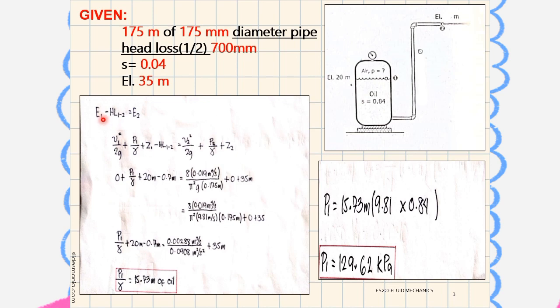Here is the formula. E1 minus HL1-2 equals E2. So, V1 squared over 2g plus P1 over gamma plus Z1 minus HL1-2 equals V2 squared over 2g plus P2 over gamma plus Z2.